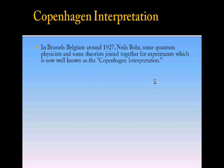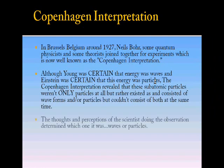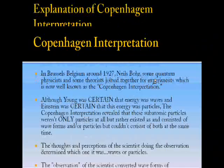In 1927, a noted physicist by the name of Niels Bohr, some quantum physicists, and some theorists joined together for experiments which is now well known as the Copenhagen interpretation. Although Young was certain that energy was waves and Einstein was certain that energy was particles, the Copenhagen interpretation revealed that these subatomic particles weren't only particles at all, but rather existed as and consisted of wave forms and/or particles, but couldn't consist of both at the same time. That means the thoughts and perceptions of the scientist doing the observation determined which one it was—whether waves or particles. So the observation of the scientist converted the wave forms of probability into particles of matter.